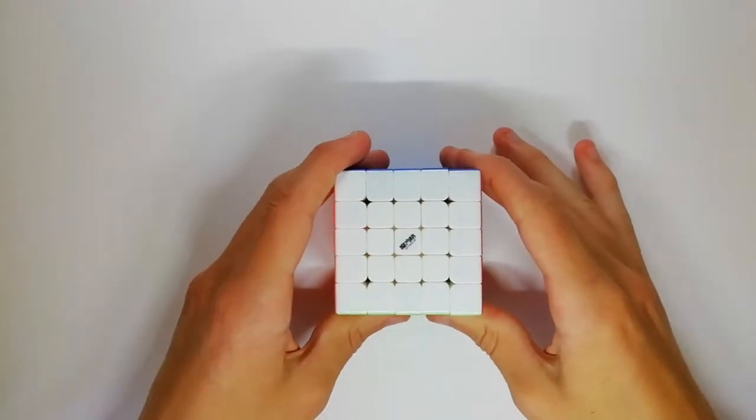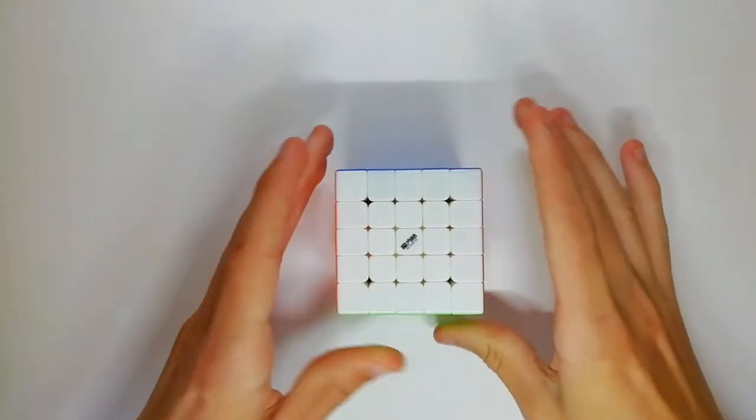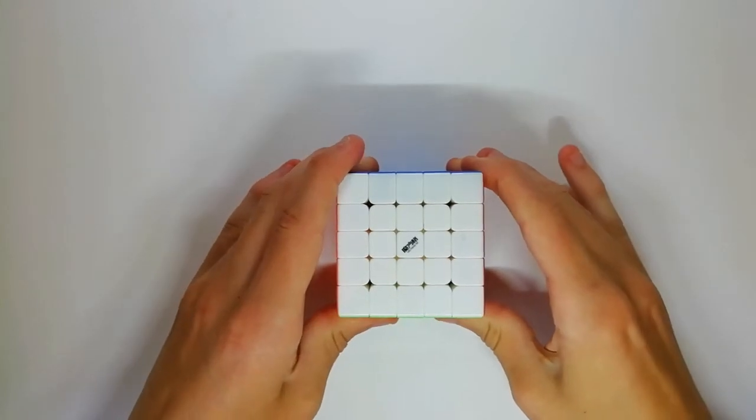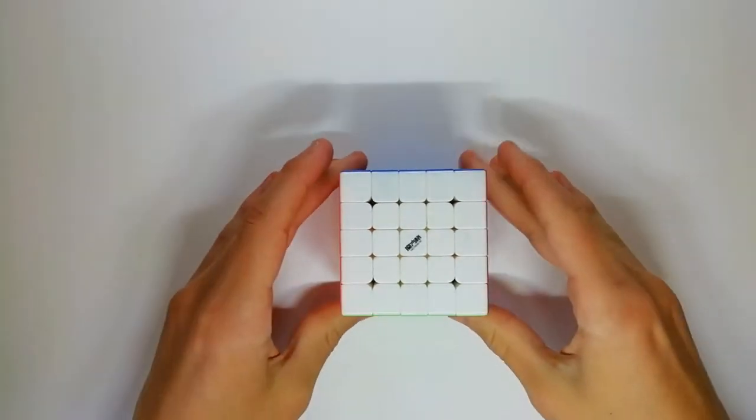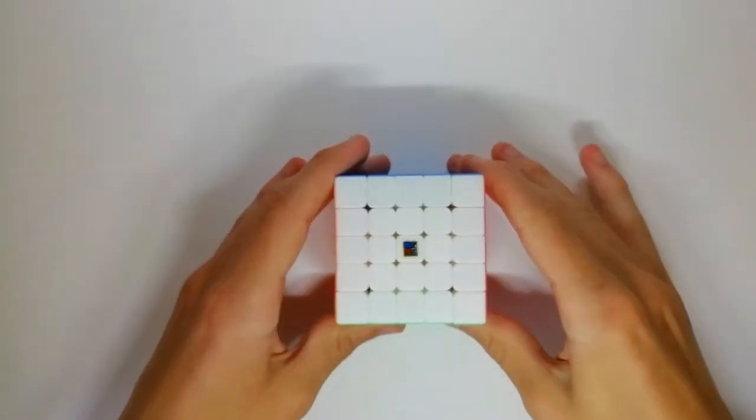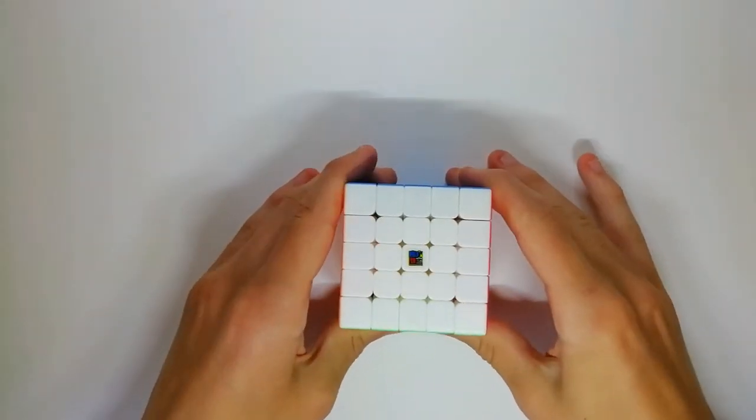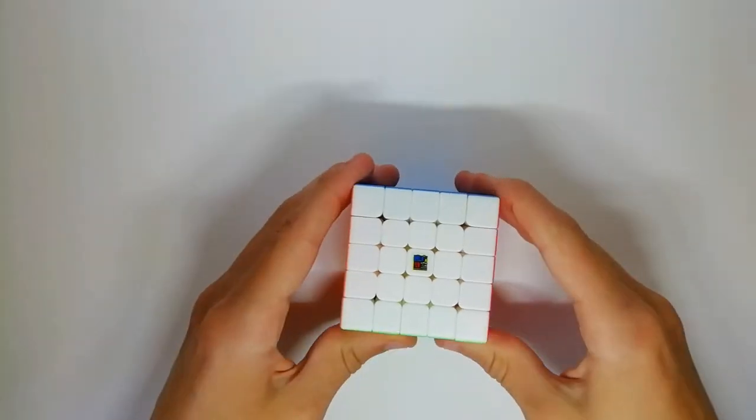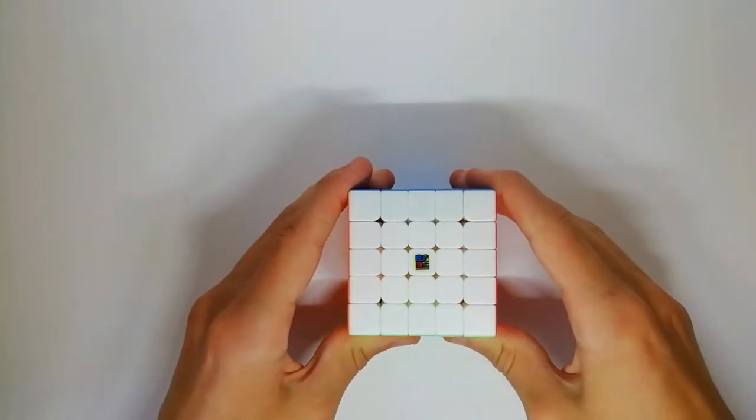But before we get on to 1st place, I'd like to give a few honorable mentions. So the first is the Wuxiuang M, which is almost 4 years old and still performs quite well, just a bit slow. The second is the Meilong 5x5 non-magnetic, being the best non-magnetic cube and only £8.